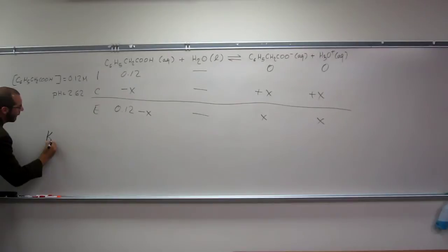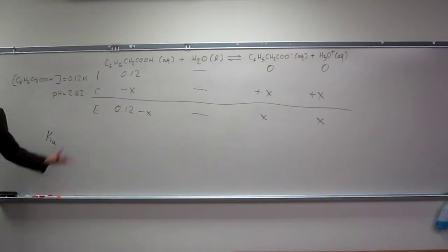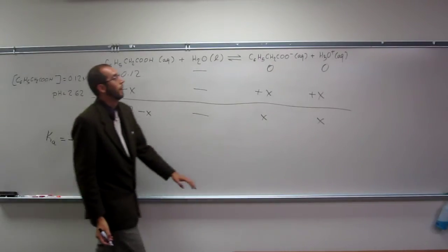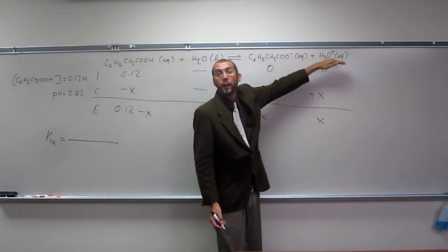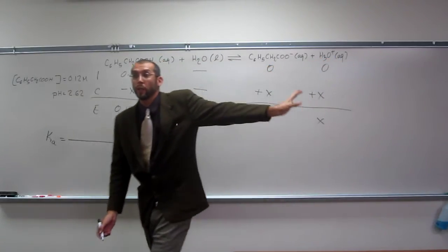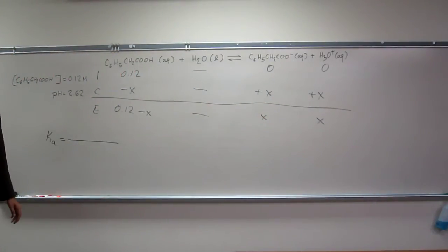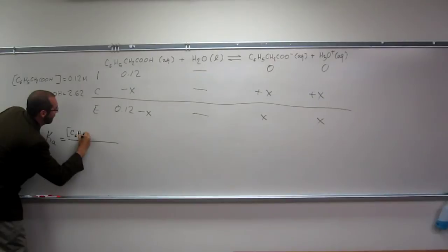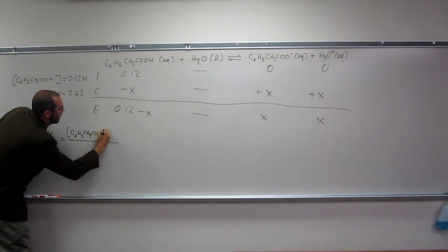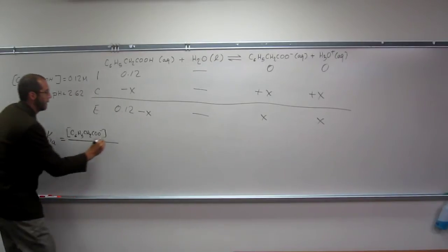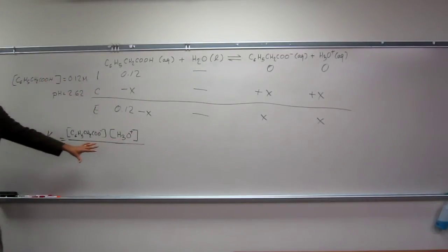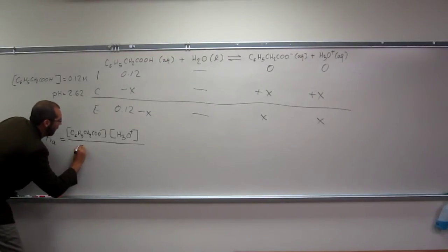So, Ka, it wants us to figure out, what is the Ka? What is the equation for the Ka? Let's figure that out first. The Ka equation is going to be what? The conjugate base here, the concentration of that, times the concentration of the hydronium ion. C6H5CH2COO- times H3O+, like that. Does that make sense?